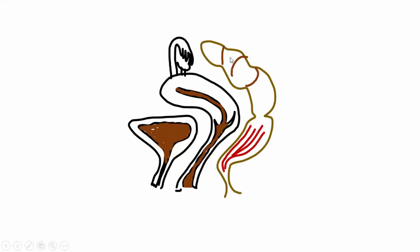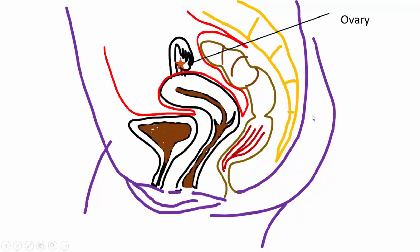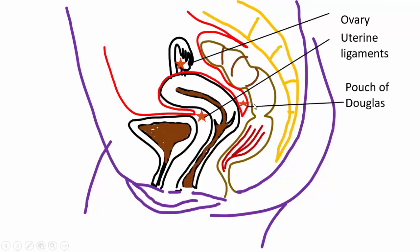Now let us understand the different sites of endometriosis. This is an illustration depicting the sagittal section view of the pelvis — the uterus along with cervix, the fallopian tube along with the ovary, the bladder anteriorly, the intestine and rectum posteriorly, the sacrum, and the red one is the pelvic peritoneum. The most common sites of endometriosis are: one, the ovary; two, the uterine ligaments; and three, the pouch of Douglas.